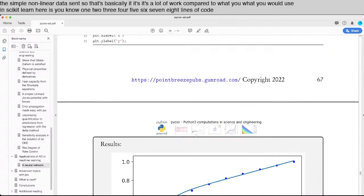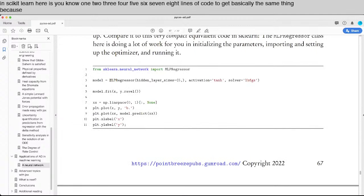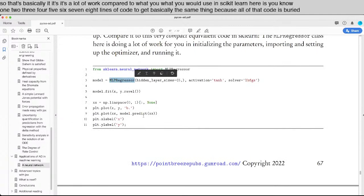eight lines of code to get basically the same thing because all of that code is buried inside the MLP regressor.